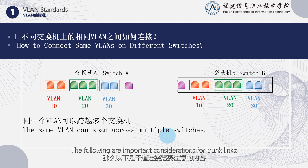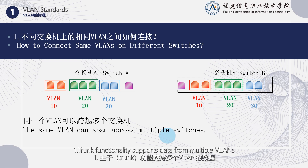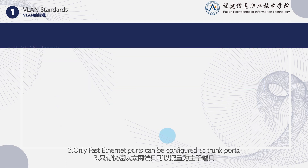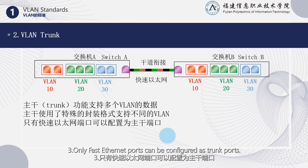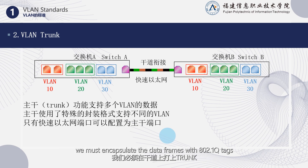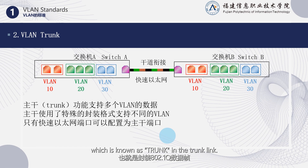The following are important considerations for trunk links. First, trunk functionality supports data from multiple VLANs. Second, trunk uses a special encapsulation format to support different VLANs. Third, only fast Ethernet ports can be configured as trunk ports. To transmit data containing VLAN information over this trunk link, we must encapsulate the data frames with 802.1Q tags, which is known as trunking in the trunk link.